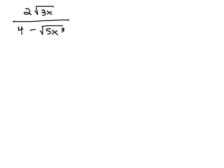In this video, we're going to rationalize a denominator using a conjugate that's got variables. In this example, 2 root 3x over 4 minus square root of 5x cubed. We notice that subtraction in there, which means we need to use a conjugate to clear the radical.